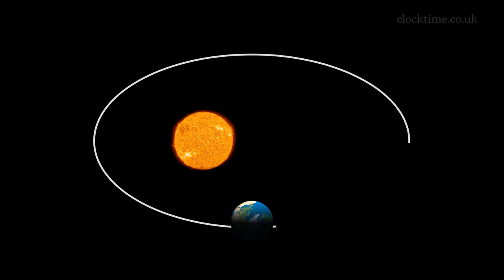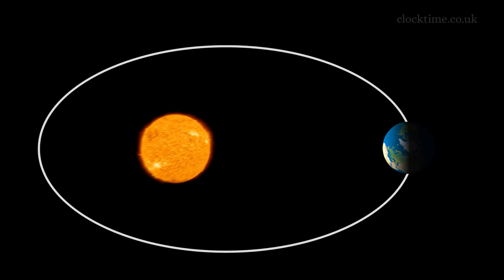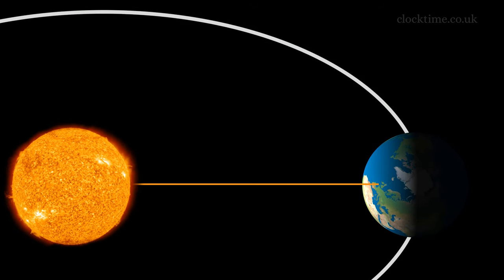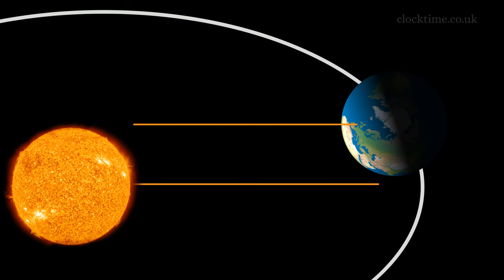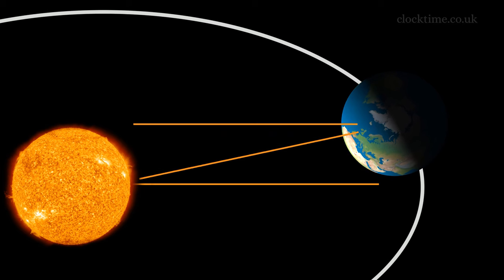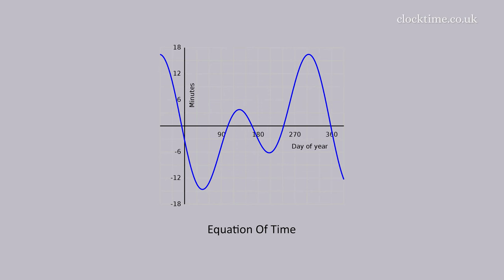The Earth's orbit is elliptical, and that means that once we've done one revolution, we then have to turn a little bit more to face back into the Sun again as the Earth goes round its orbit. Because the orbit is elliptical, every day it's slightly different — it goes up to 15 minutes out and 15 minutes the other way. And that's called the equation of time.